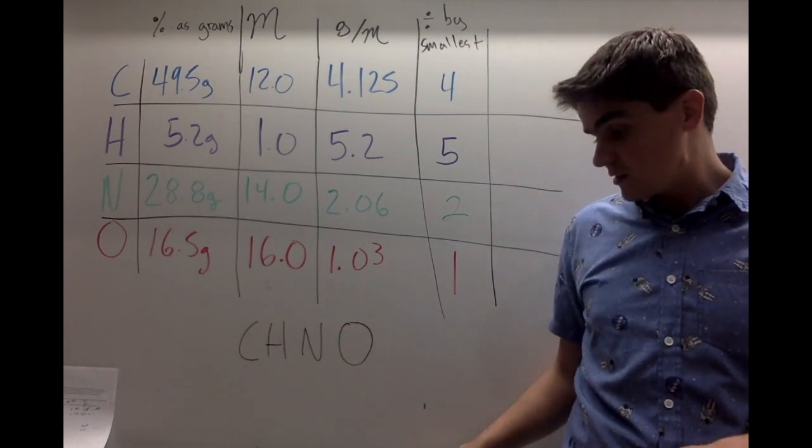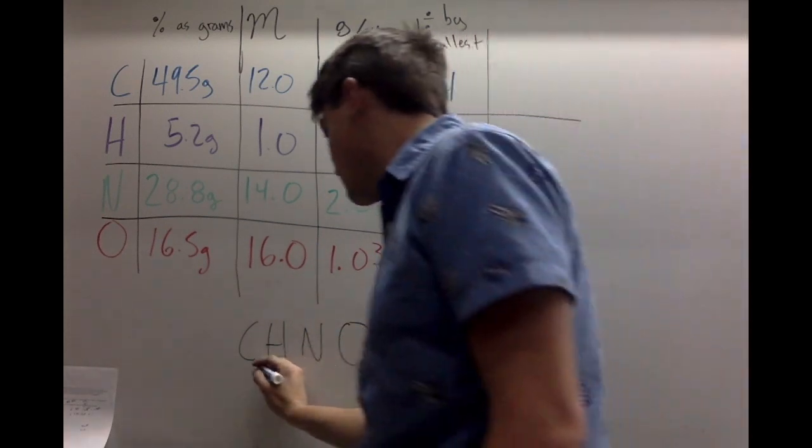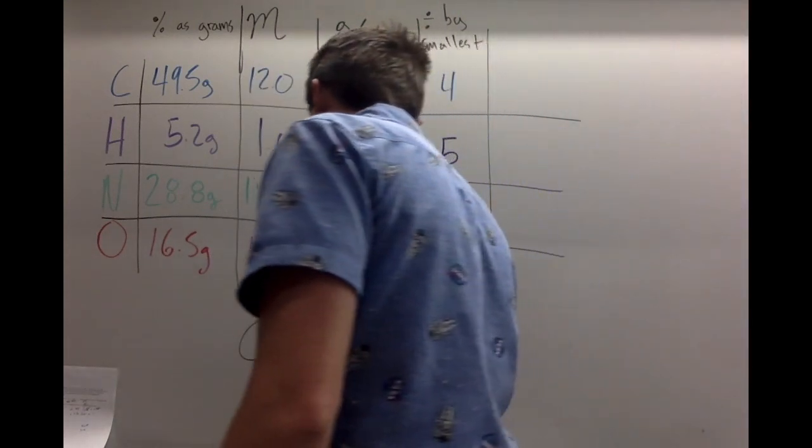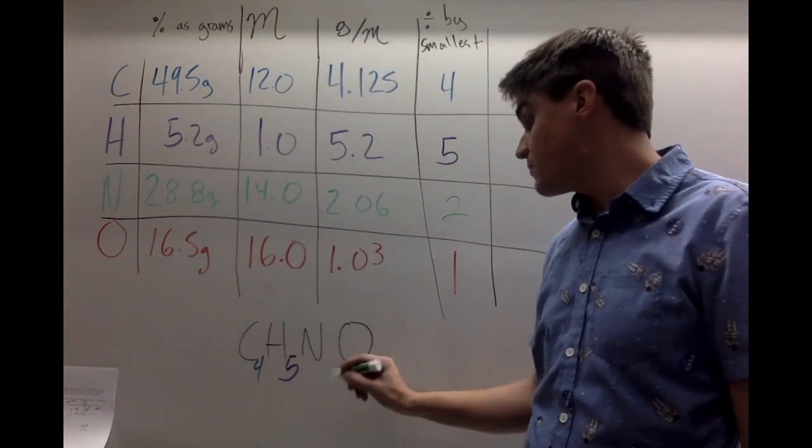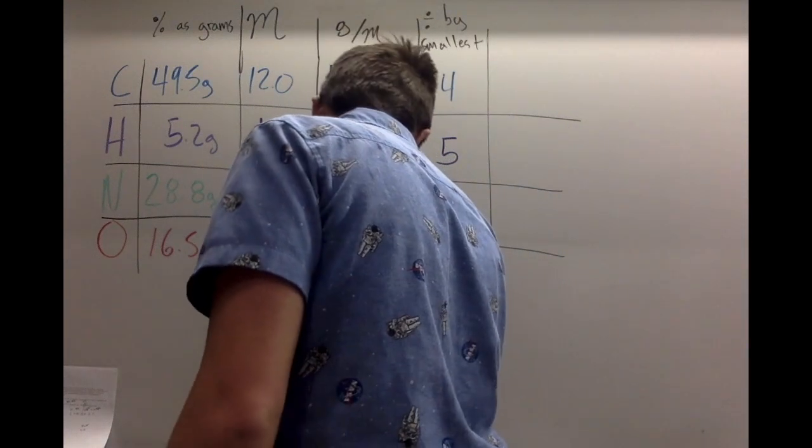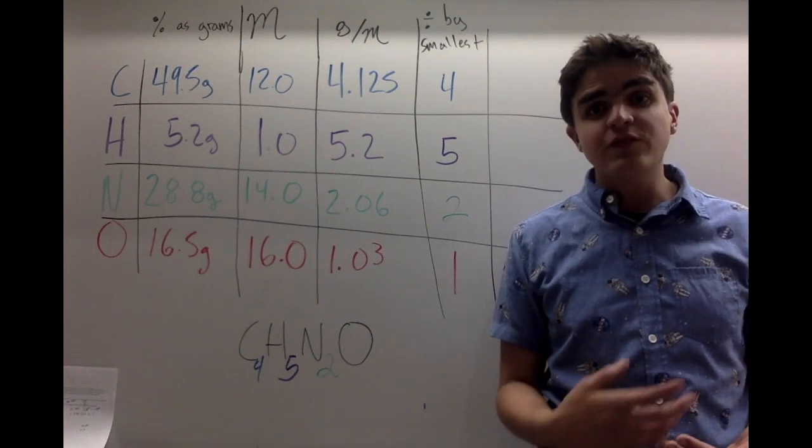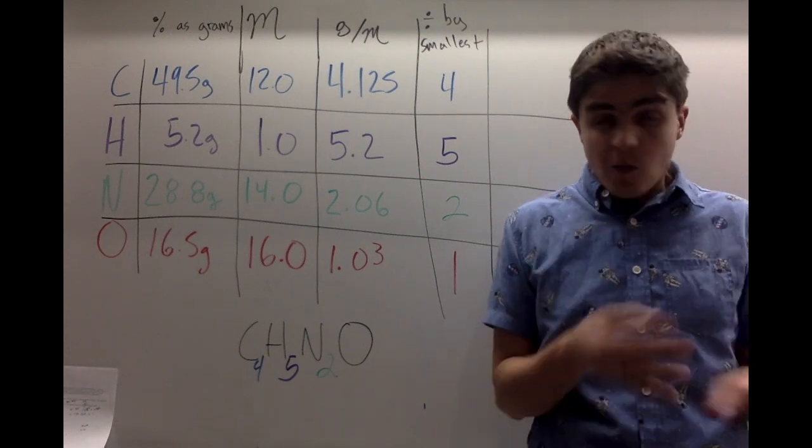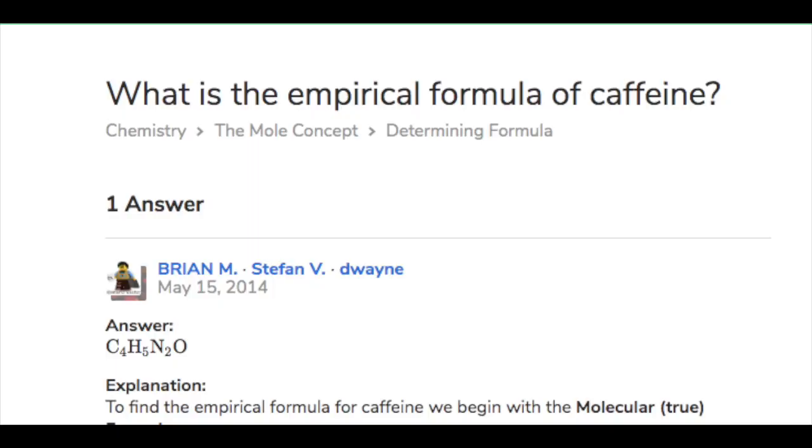There we go. So what I need to do now is I need to translate this. If I've got a 4 here on carbon, it's got to be a 4 down here. If I've got a 5 here on hydrogen, it's got to be a 5 here. If I've got a 2 here on nitrogen, you guessed it. The 2 needs to come down. And oxygen, we don't write 1s in chemistry. So C4H5N2O is the empirical formula for caffeine, which is actually real life. You can go Google, what's the empirical formula of caffeine? As a matter of fact, I'm going to do that for you right now. Pretty cool, isn't it?